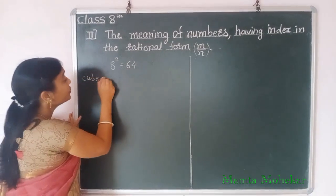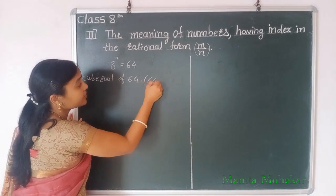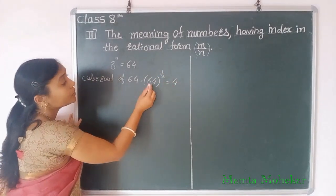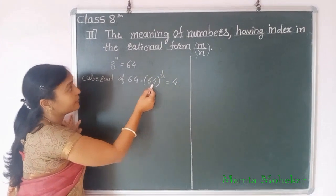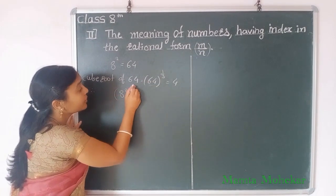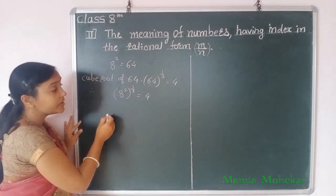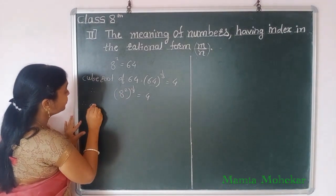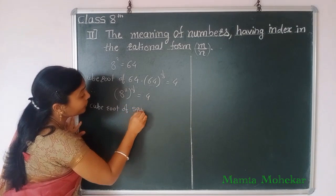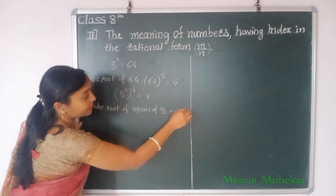We also want to write the cube root of 64. We write it as: 64 to the power 1 by 3 is equal to 4. So instead of 64, we write 8 squared. So we write: 8 squared to the power 1 by 3 is equal to 4. In words, we can write: cube root of square of 8 is 4. This is our equation number 1.